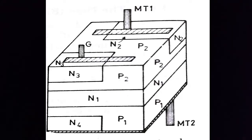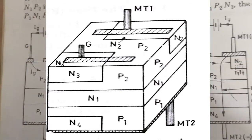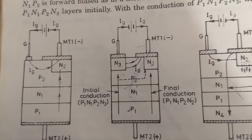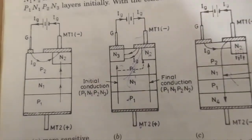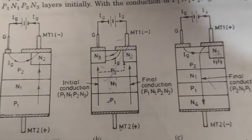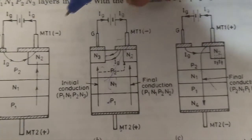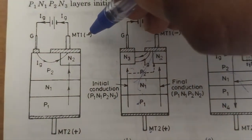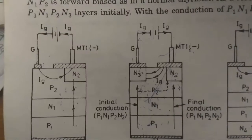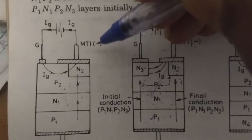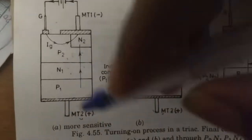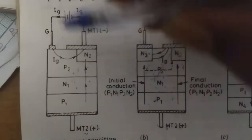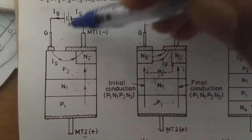We will look into the turn-on process of a TRIAC. There are four possible ways, and we will discuss them one by one. The first is that main terminal 1 (MT1) is negative, MT2 is positive, and the gate is also positive.